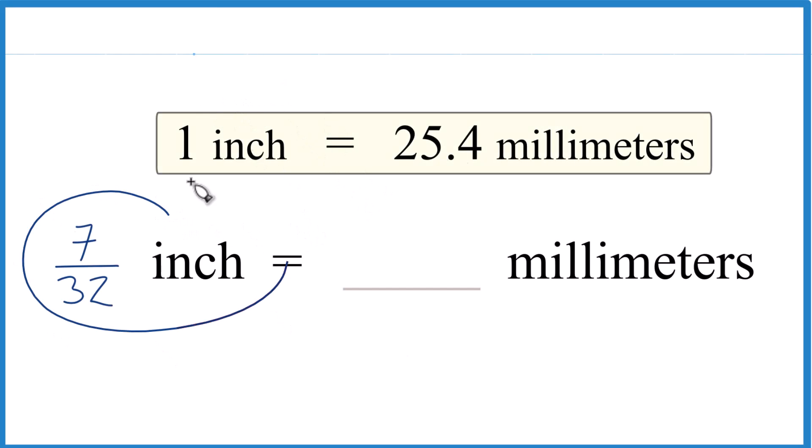Let's convert 7/32 of an inch to millimeters, and here's how we do it. You could just look it up. They have charts for drill bits, for example, that show you all the common inches to millimeters conversions. So that's one way to do it.